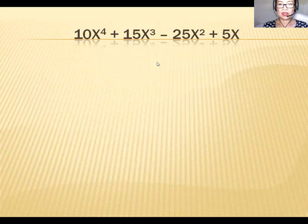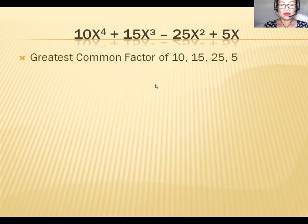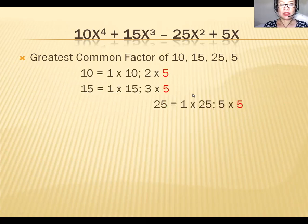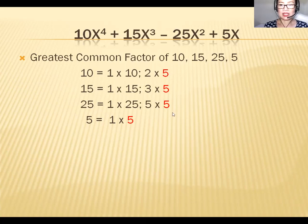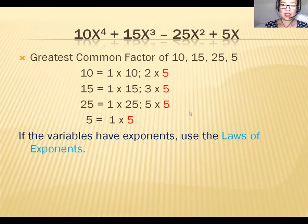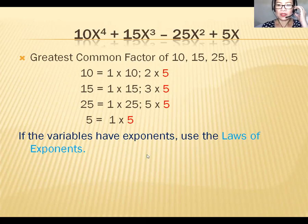Another example: 10x⁴ + 15x³ − 25x² + 5x. The GCF for the coefficients 10, 15, 25, and 5 is 5. For variables with exponents, use the laws of exponents — the variable with the smallest exponent is the common factor.